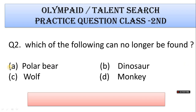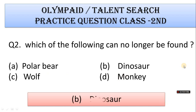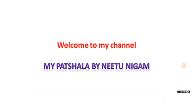Number 2: Which of the following can no longer be found? A. Polar Bear, B. Dinosaur, C. Wolf, D. Monkey. Correct answer is Option B. Dinosaur.